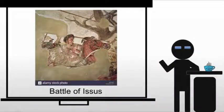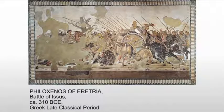Then we have the Battle of Issus. The Battle of Issus is often referred to as the Alexander Mosaic, and what we're seeing is believed to be the Battle at Issus in which Alexander will defeat the Persian king Darius. Here's the image — what we're actually seeing is a large floor mosaic from a Roman house at Pompeii.